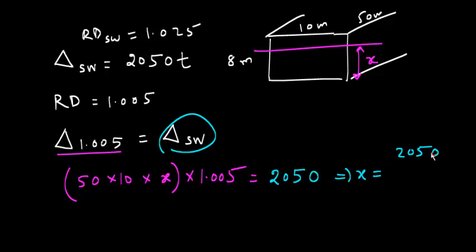And the value of x will be 2050 divided by 50 into 10 into 1.005. So after solving, I get this value: x is equal to 4.0796 meters.